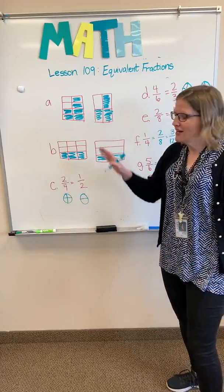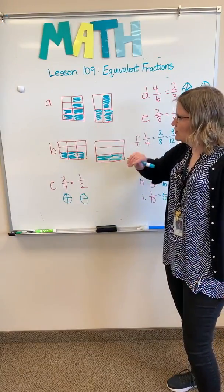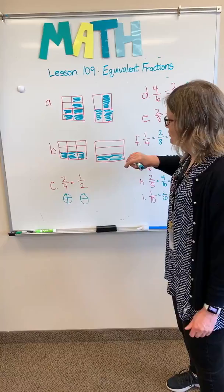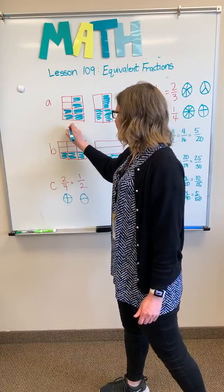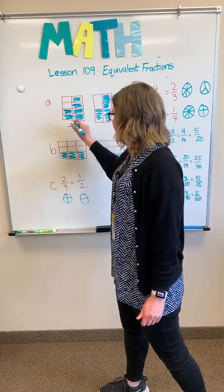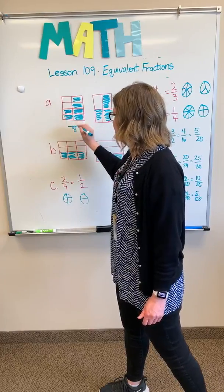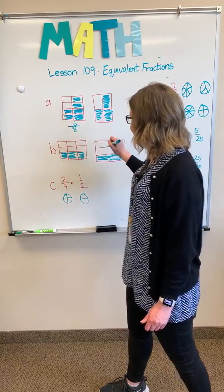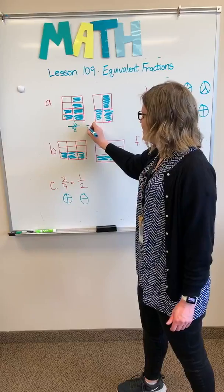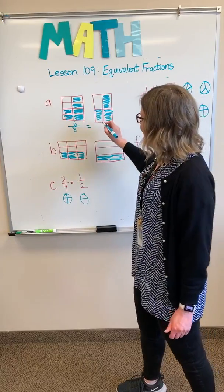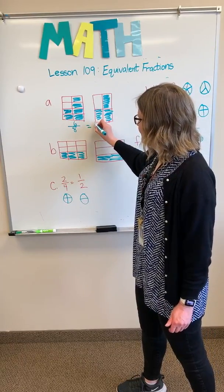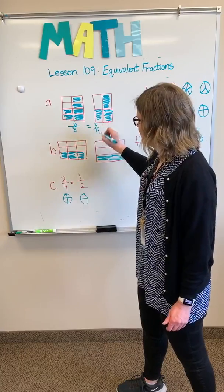They want us to identify the equivalent fractions in this illustration. We see that this has 8 parts: 1, 2, 3, 4, 5, 6—so 6 eighths. We also see that this is equivalent, and we identify this as 3 fourths.